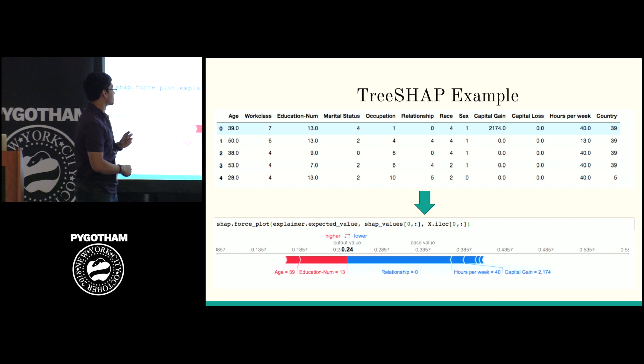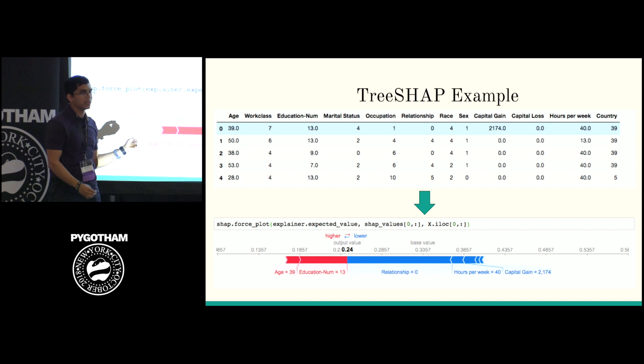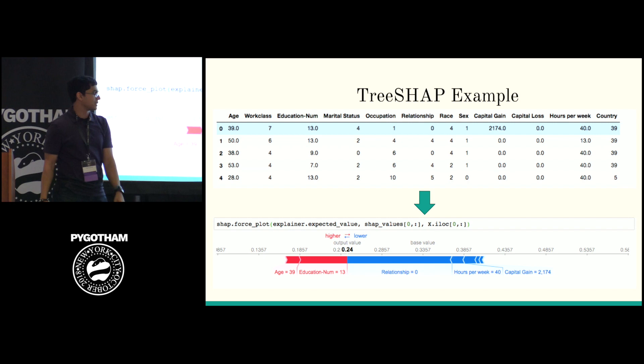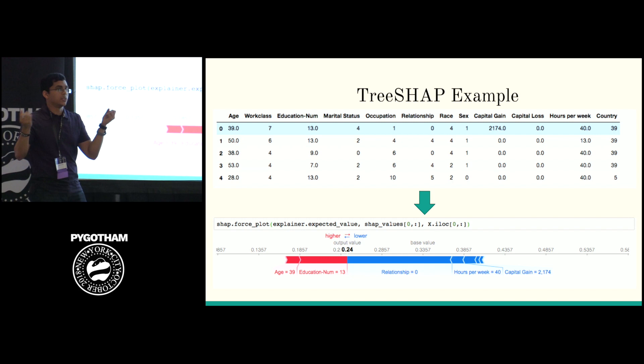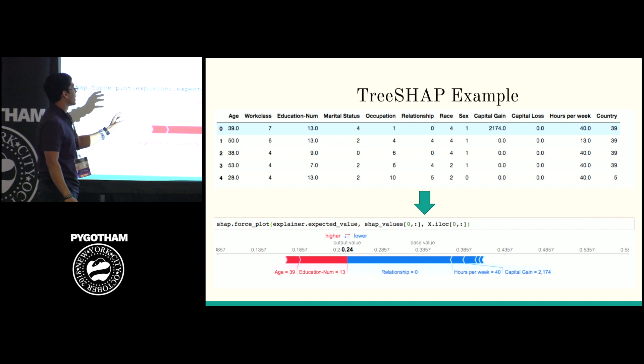The red shows the things working for you, blue shows the things working against you. This person had education level 13 — college educated — and is 39 years old. That's reason to believe they would make more than $50,000: good education, older and more along in their career. But working against them: relationship being zero, which might mean being single — if you're not married, you don't have joint income — plus other factors like small capital gains. This shows what worked for and against this one data point.